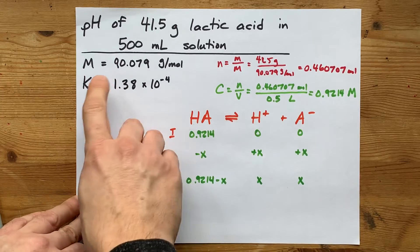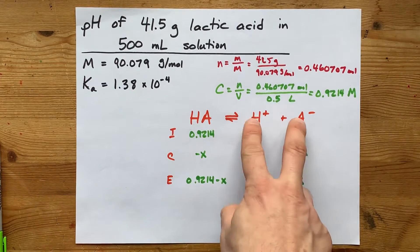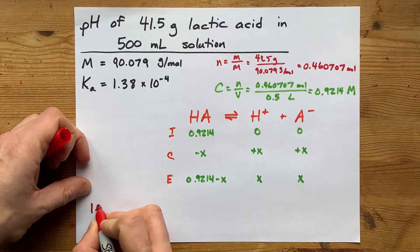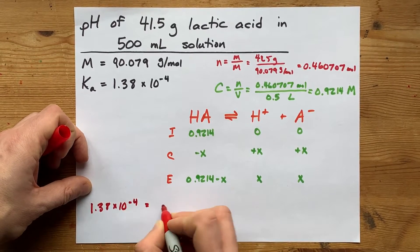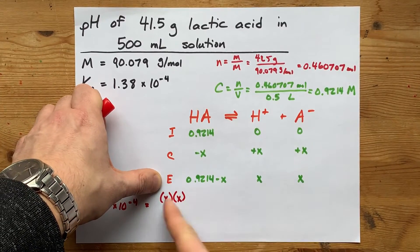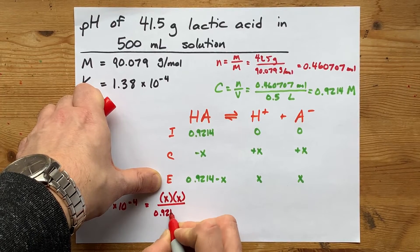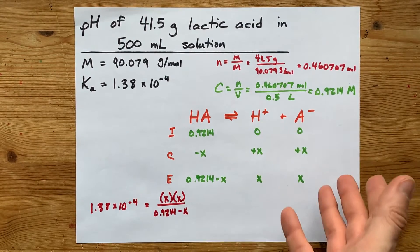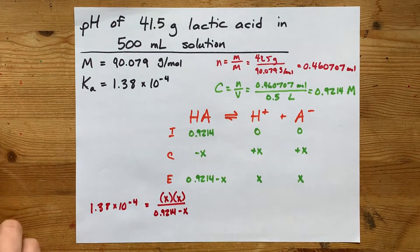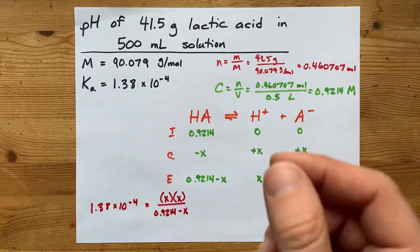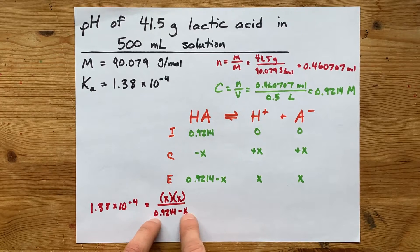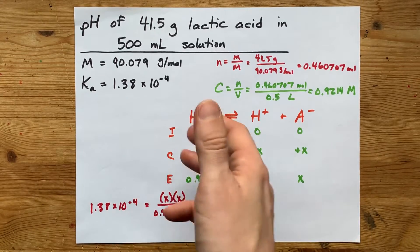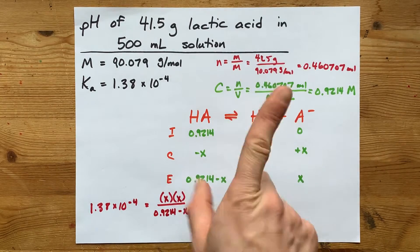Now that equilibrium has this equilibrium constant. Ka equals products over reactants. So 1.38 times 10 to the negative 4 equals products X and X over reactants 0.9214 minus X. Solving for X here will get you the concentration of H plus, which then you can get pH from. Now, the official way to solve this explicitly is with the quadratic formula. You have to multiply this 0.9214 minus X on the other side, multiply it out, move everything to one side of the equation, and use negative B plus or minus the square root of B squared minus 4AC all over 2A. But maybe there's a better way.